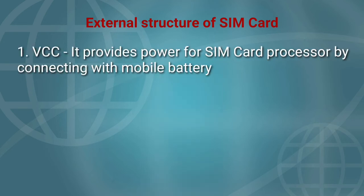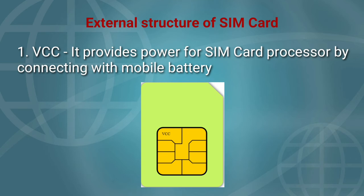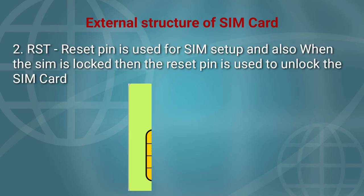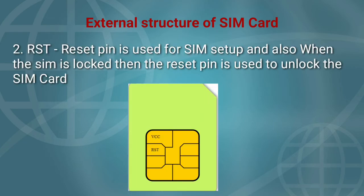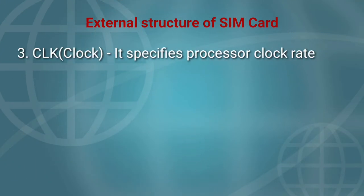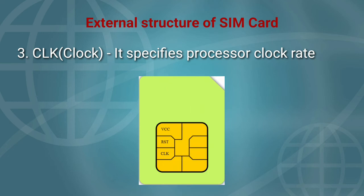1. VCC — it provides power for the SIM card processor by connecting with the mobile battery. 2. RST, the reset pin, is used for SIM setup, and also when the SIM is locked, the reset pin is used to unlock the SIM card. 3. CLK, clock — it specifies the processor clock rate.